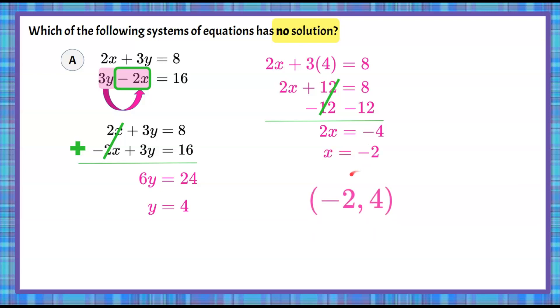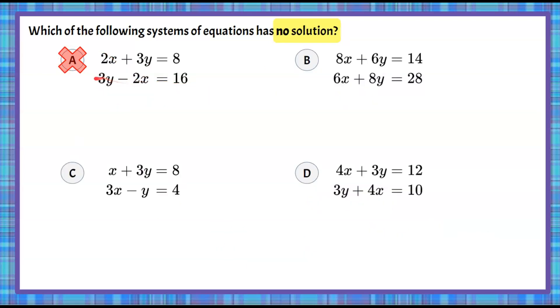So our solution is the ordered pair negative 2, 4. So this system has one solution, meaning a cannot be our answer choice. Now let's move back to our question. We know a is not the solution. Let's look at b.